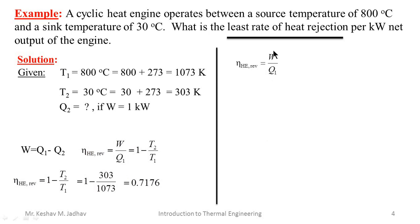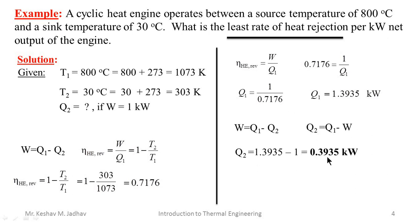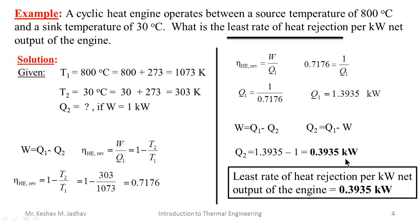For the reversible heat engine, efficiency can also be calculated using W upon Q1. With W known and efficiency calculated, we can find Q1 equals 1.3935 kW. Then to calculate Q2, using Q2 equals Q1 minus W, substituting values gives Q2 equals 0.3935 kW. Therefore the least rate of heat rejection per kilowatt net output of the engine is 0.3935 kW.